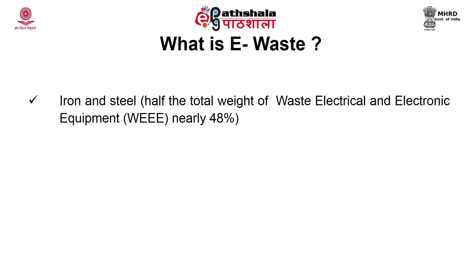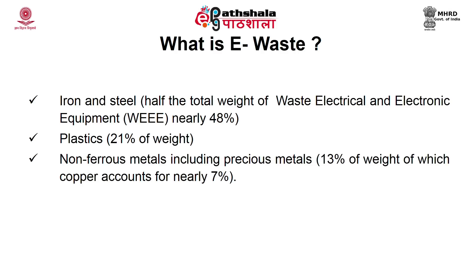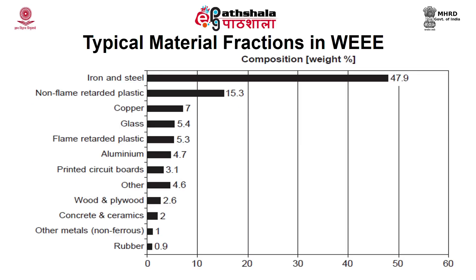Iron and steel contribute nearly 48% of e-waste, that is almost half the total weight of waste electrical and electronic equipment. Plastic contributes 21% of e-waste and other non-ferrous metals contribute around 13% of its weight. Among the non-ferrous metals, copper alone contributes 7%. This figure shows the typical material fraction in waste electrical and electronic equipment, with composition given based on weight percentage. The maximum contributor is iron and steel, followed by non-flame-retarded plastic, then copper, and the least is rubber contributing 0.9%.